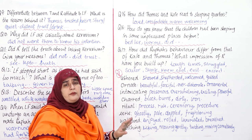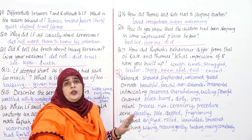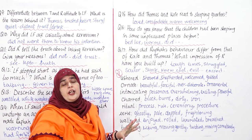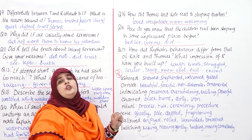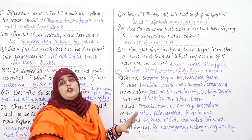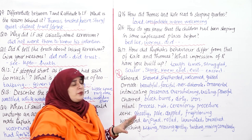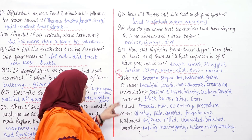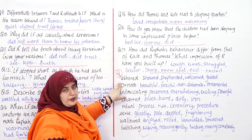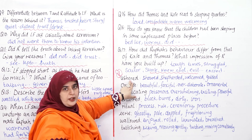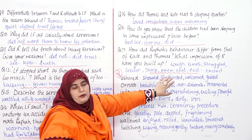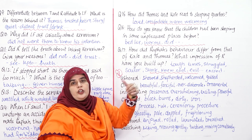Rafa had been to the real world. Kate and Thomas were sheltered children — they had been to their homes only and had no clue of what might be happening outside. Now for your exercise: the task is to find words of similar meaning according to the text.